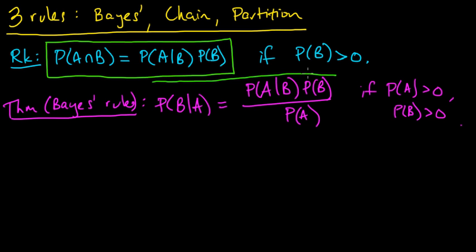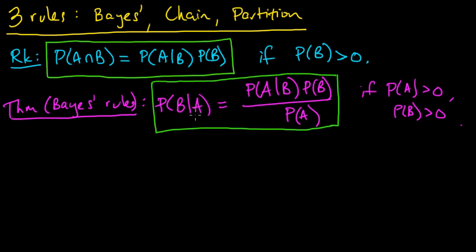This is simple to prove. If we take the probability of A, multiply it over to the other side, and then apply our remark, we get the probability of B intersect A. On the other side, we again apply the remark and get the probability of A intersect B. So both sides are equal. This is a very simple, almost trivial consequence of the definition of conditional probability.